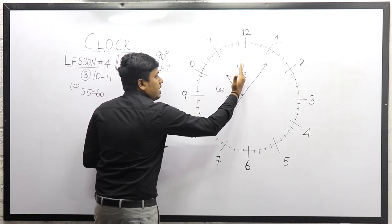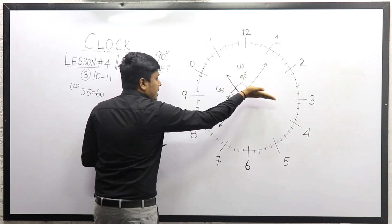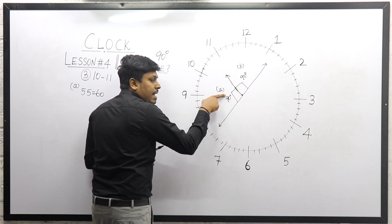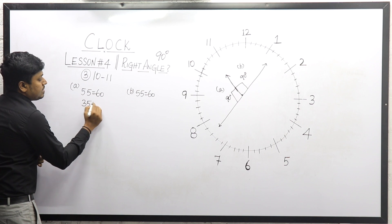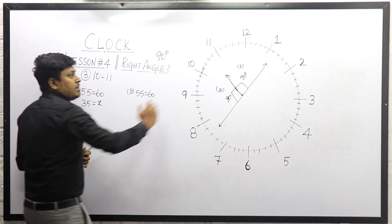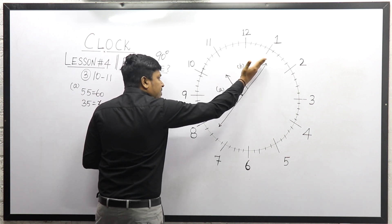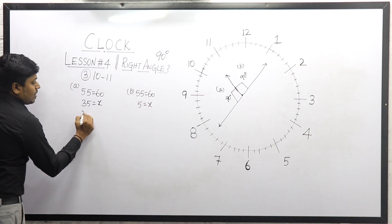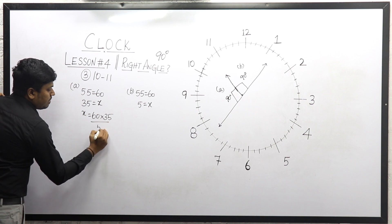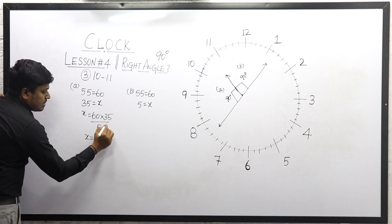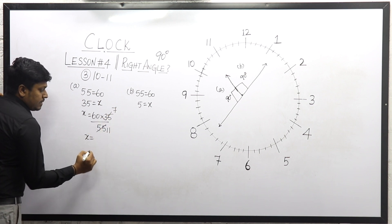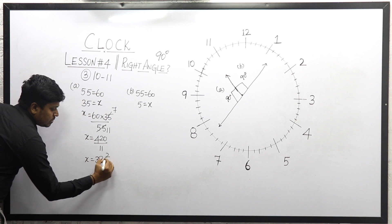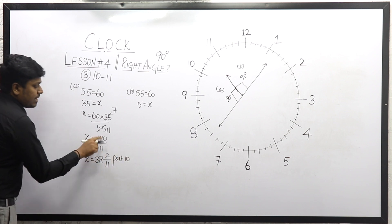For possible diagram one, from the starting point the minute hand moves 5, 10, 15, 20, 25, 30, 35 — after 35 minutes both hands are at right angle. So first option: 35 minute spaces equals X. For the second possible, the minute hand moves 5 minutes — after 5 minutes both hands will be at right angle. So 5 equals X. Solving: X equals 60 × 35 divided by 55, giving 420 divided by 11, which equals 38 2/11 past 10.